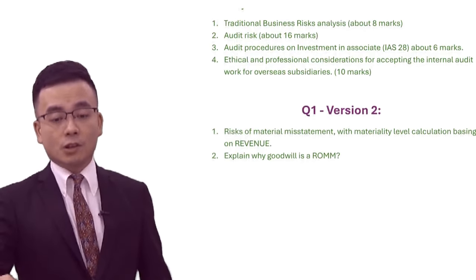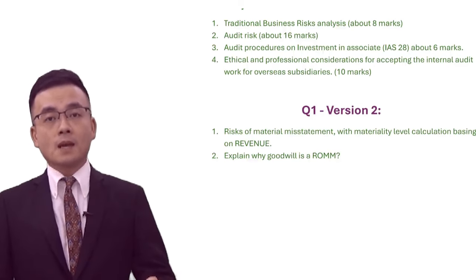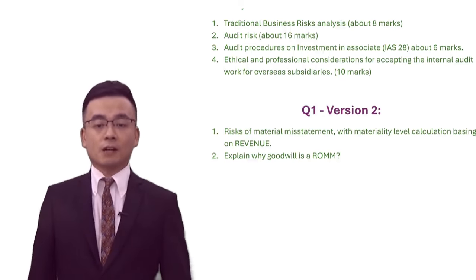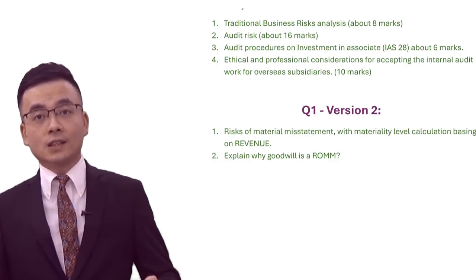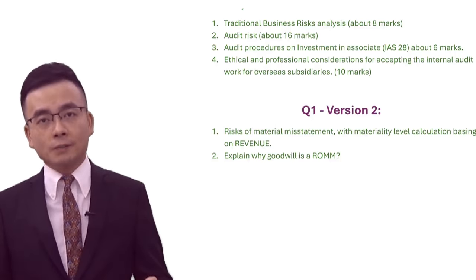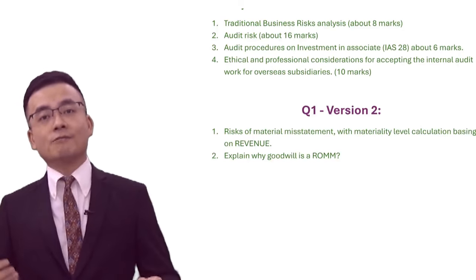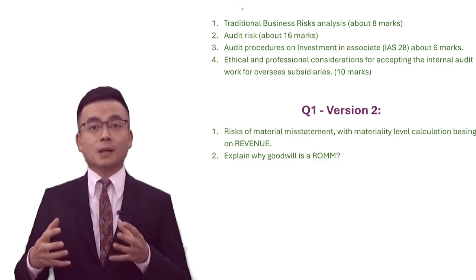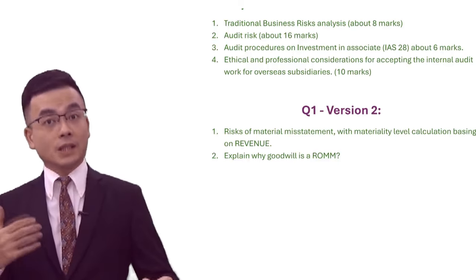Version number two of question one: the first requirement is the risk of material misstatement. However, in this requirement the examiner states that the materiality level calculation should be based on revenue. Not particularly difficult, although slightly non-standard, but it's okay. The next requirement is to explain why goodwill is a risk of material misstatement. To determine the goodwill, there are lots of different accounting policies that we need to use or can choose from.